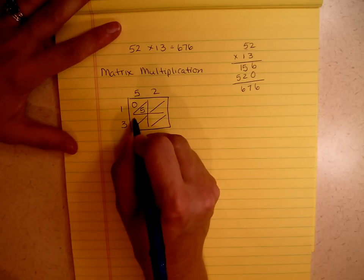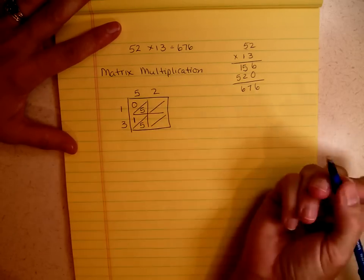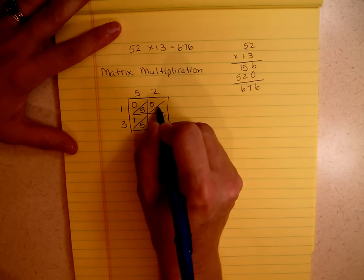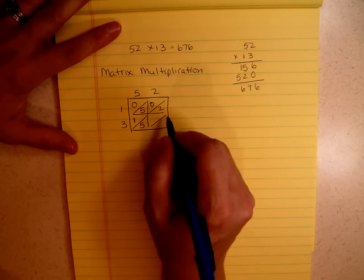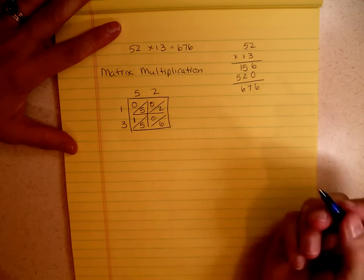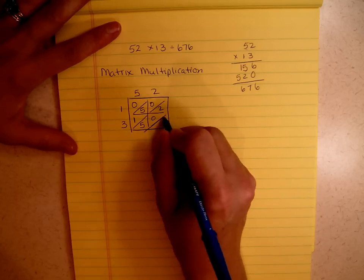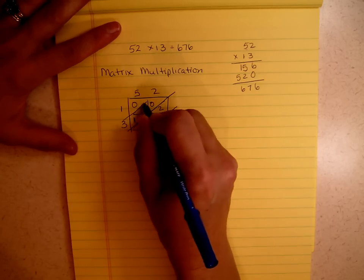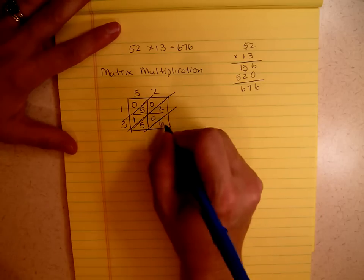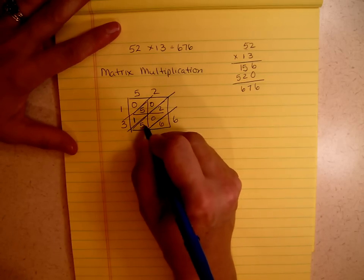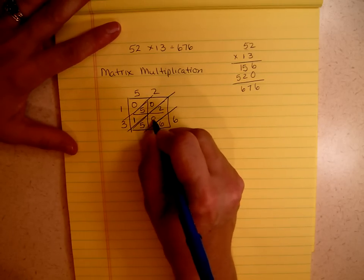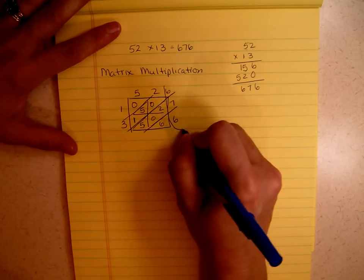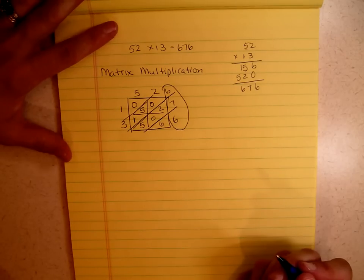5 times 3 is 15. 1 times 2 is 2, so that's a 0 and a 2. And 2 times 3 is 6, so that's a 0 and a 6. Now I'm going to extend these lines. And I'm simply going to add 6, 5 plus 0 is 5, plus 2 is 7, and 1 plus 5 is 6. And my answer is 676.